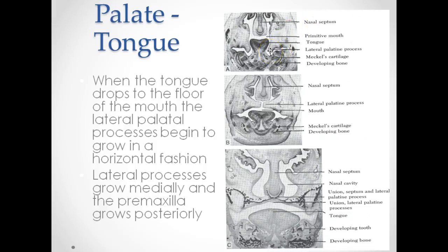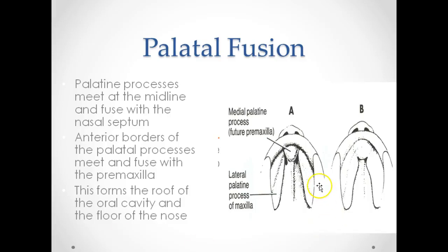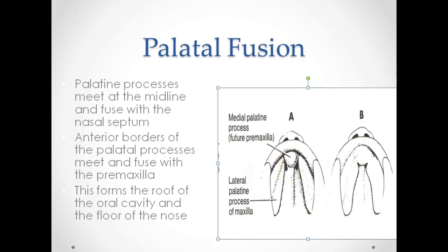This image shows the lateral palatine processes growing vertically next to the tongue. Once the tongue has dropped to the floor of the mouth, the lateral palatine processes start to develop horizontally and approach each other at the midline. The premaxilla in this area then grows posteriorly to join the lateral palatine processes. You can see here the median palatine process, or the premaxilla, and the lateral processes moving towards the midline, with the premaxilla developing posteriorly.